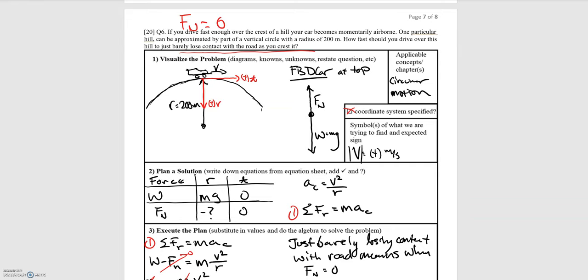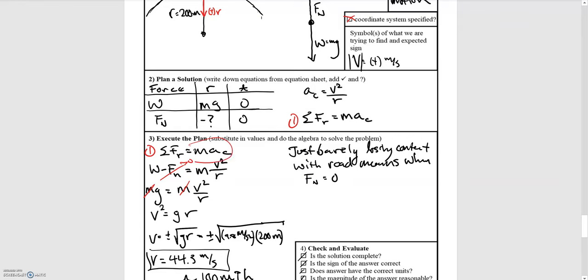In this problem, the hill can be approximated as a circle, so we are dealing with circular motion — similar to the roller coaster problems in the note packet. Since the normal force is zero and we have circular motion, we use the centripetal acceleration. The centripetal acceleration a_c equals v squared over r, where v is the velocity tangent to the radial direction.